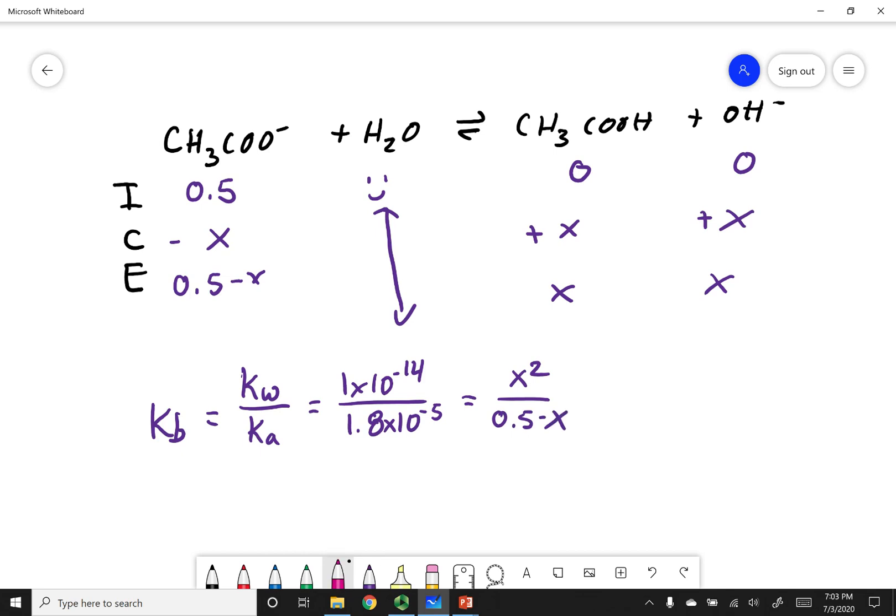So let's crank out some math. So this becomes 5.56 times 10 to the negative 10th. This is a very small KB. So I can use an approximation. This is going to equal X squared over 0.5. So I can calculate X. And X becomes 0.00001658.